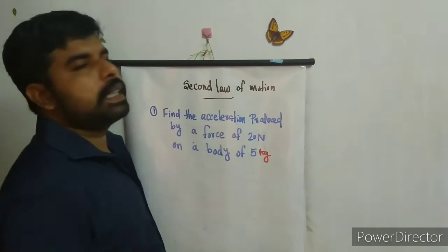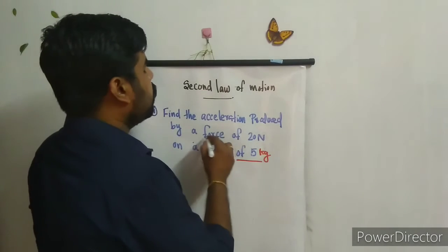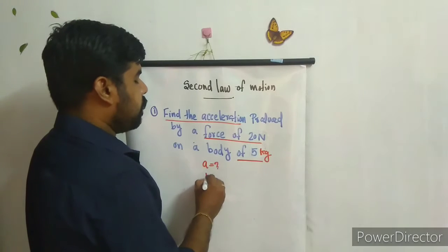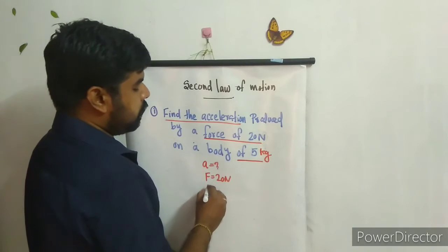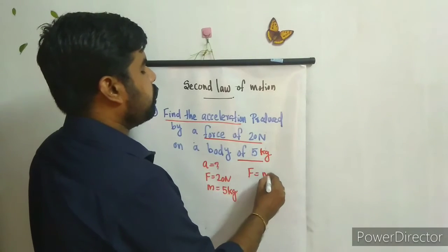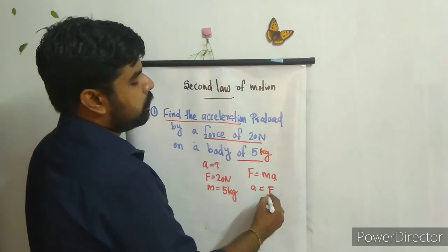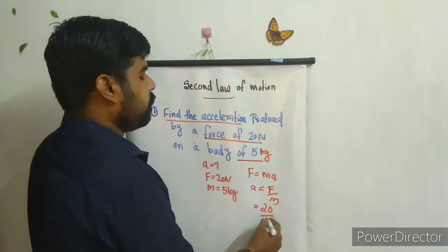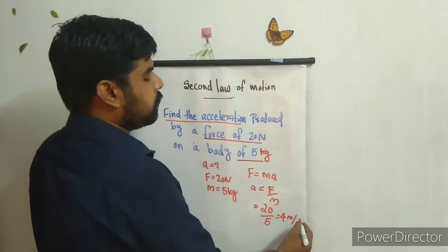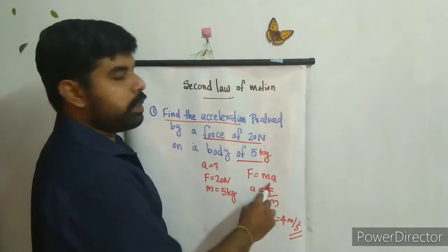Problem one: We have to find the acceleration produced by a force of 20 Newton on a body of 5 kilogram mass. The force acting on the object is 20 Newton and the mass m is equal to 5 kilogram. Using F equals ma, acceleration a equals F by m, so a equals 20 by 5, which gives 4 meter per second square.